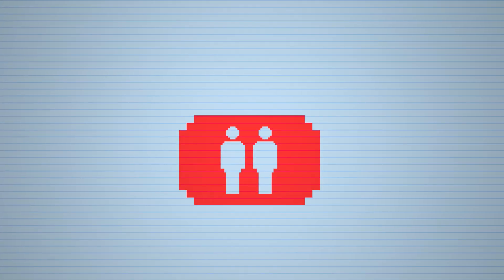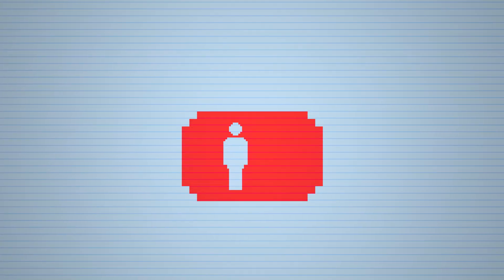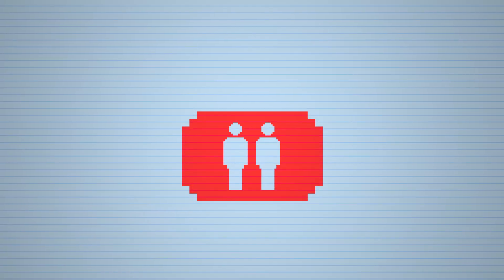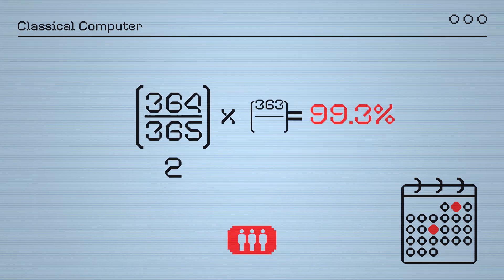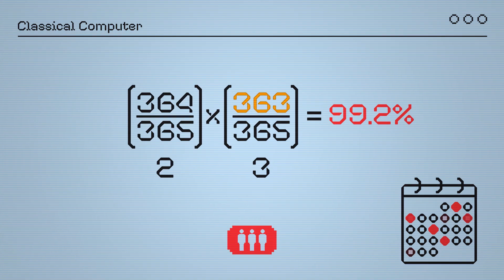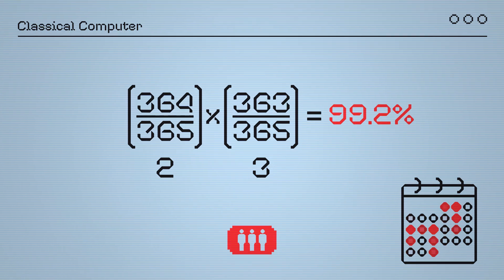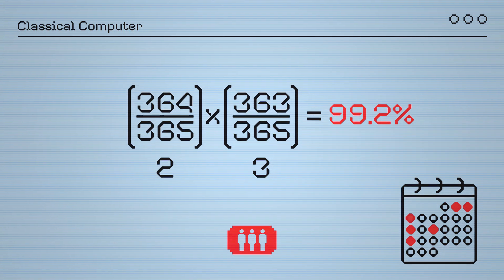Thus, with each new person who enters the house, we'll calculate the probability of that person's birthday being distinct from those already admitted in. When the third person enters, there are 363 dates left in the calendar. The probability that this new person has a different birthday is 99.2%.